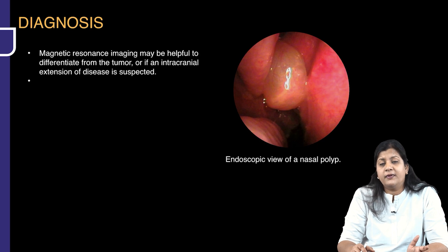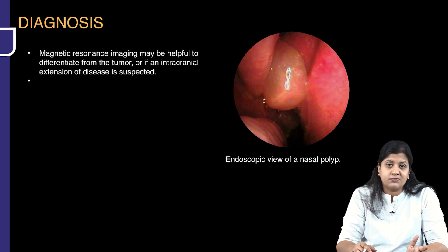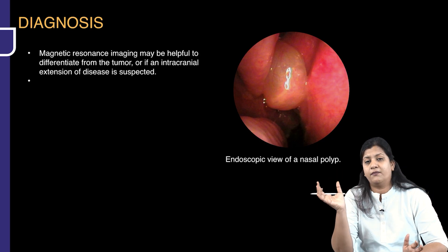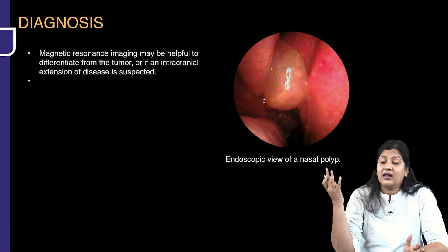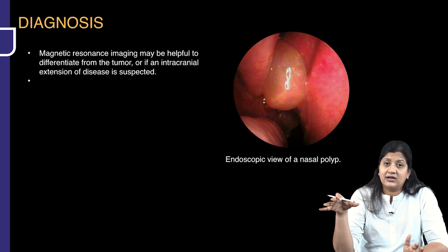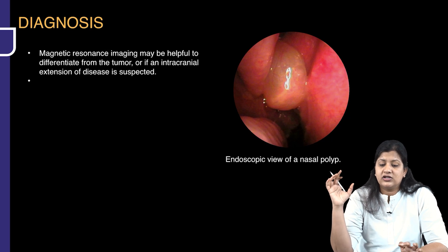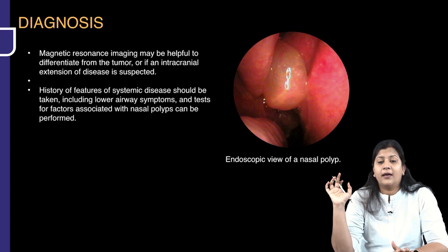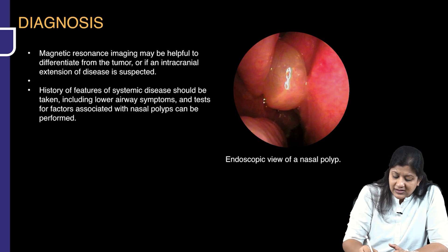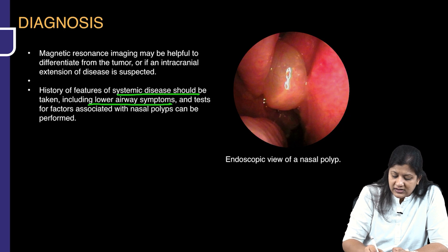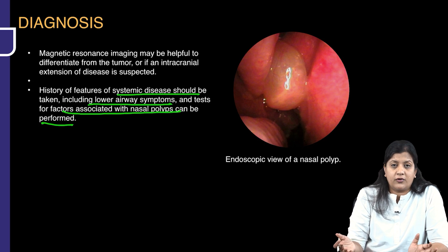MRI should only be done if you are suspecting the possibility of a meningocele or any intracranial extension of the polyp or disease. Only in these situations will you look for MRI. History features of systemic diseases should be taken, including lower airway symptoms, and tests for factors associated with nasal polyps should be performed.